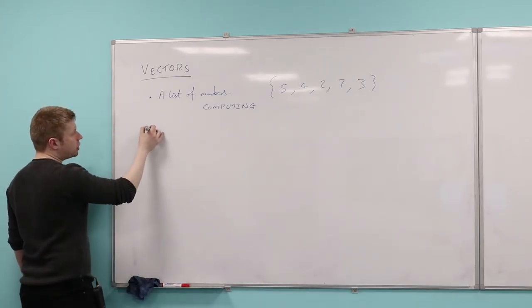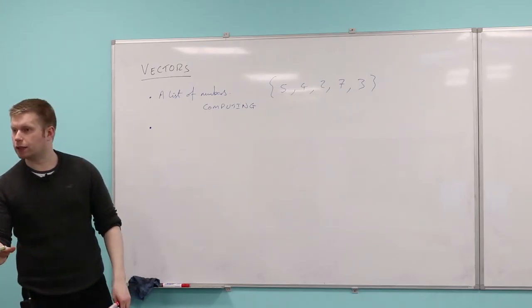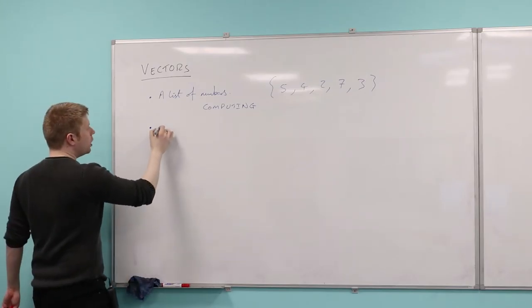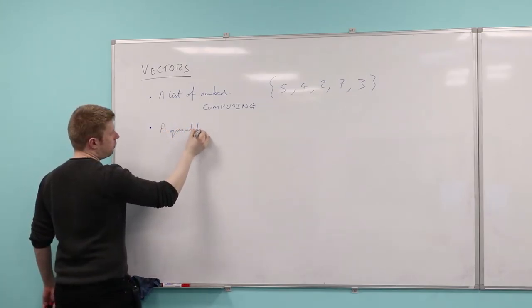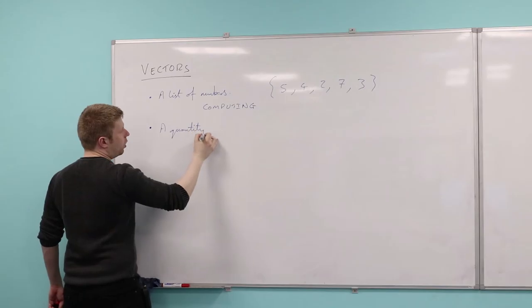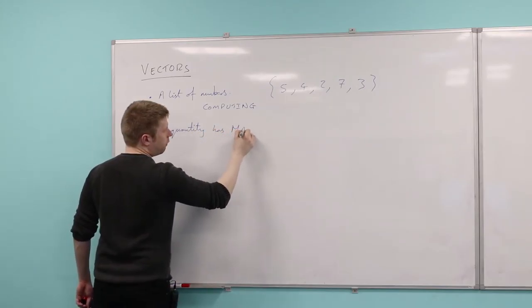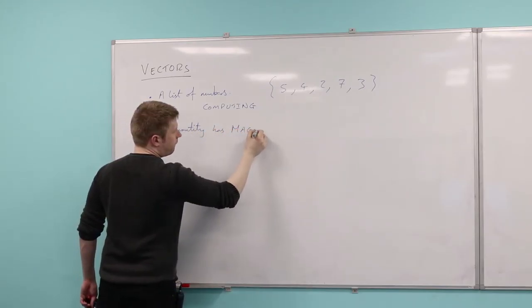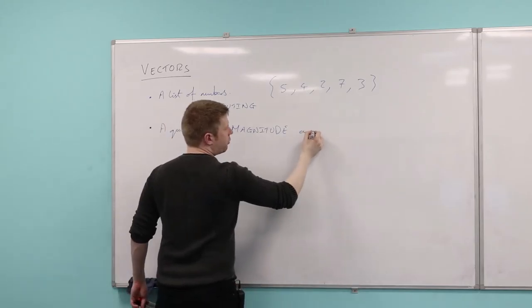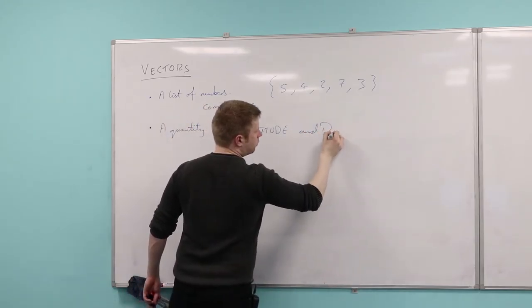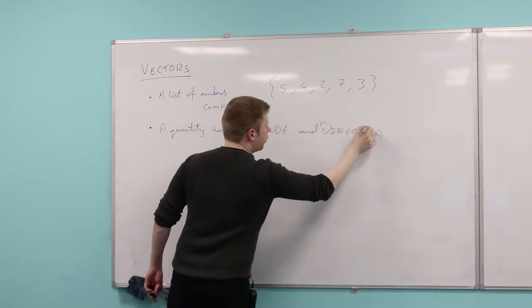So the next definition of a vector is actually the physicist's definition of a vector. It is a quantity which has magnitude and direction.